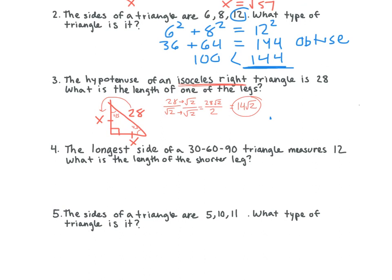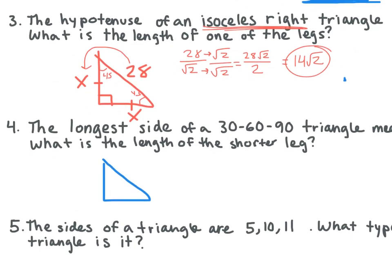Let's do number 4. The longest side of a 30-60-90 triangle measures 12. What is the length of the shorter leg? Draw it out. The longest side is the hypotenuse, so our hypotenuse is going to be 12. Let's say this is 30 and this is 60. It's asking for the shorter leg — the one across from 30. To go backwards, we divide by 2. So 12 divided by 2 — x equals 6.